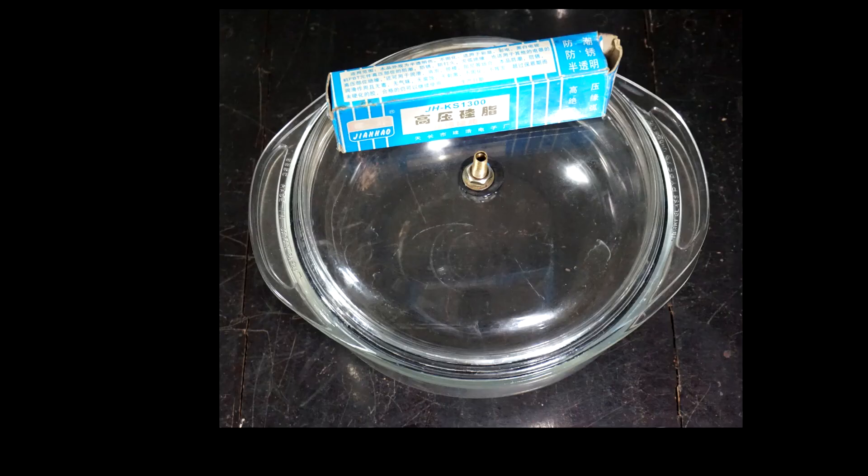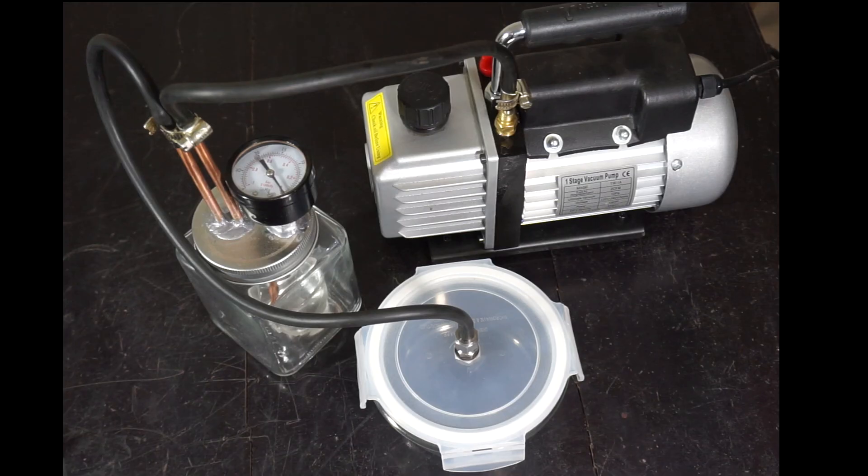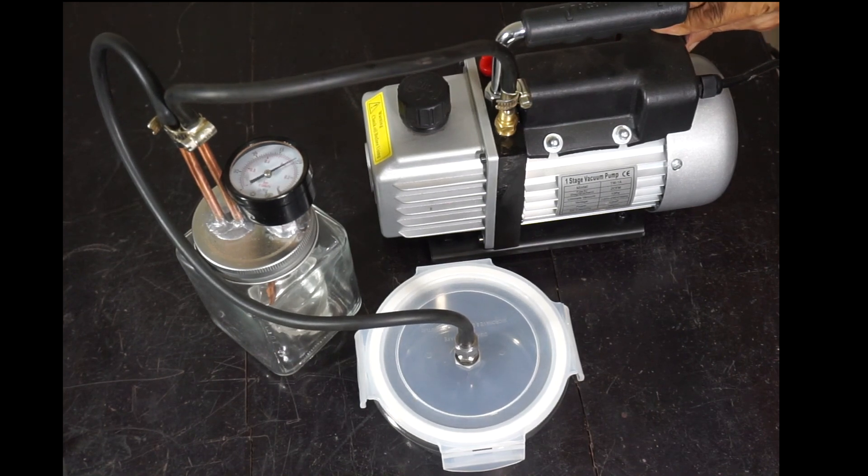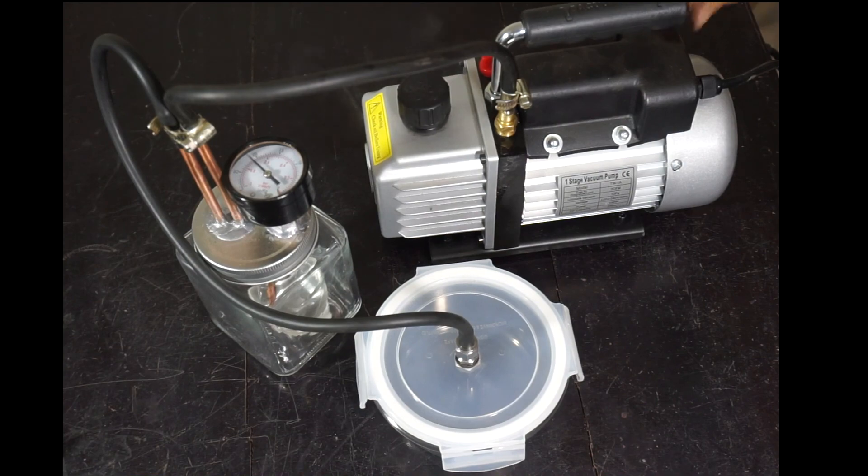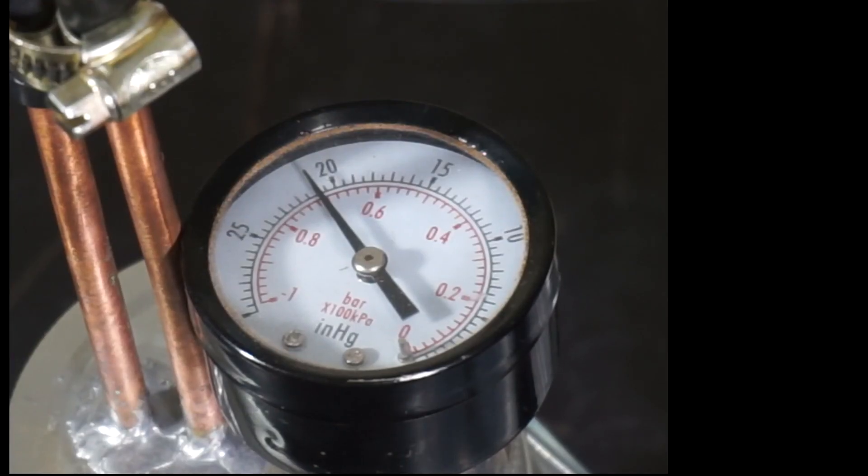This glass bowl has a plastic lid and it deforms under vacuum but it does not leak or completely collapse. A larger glass bowl and Chinese silicone grease. You can see the lid move with the vacuum here. This is oil mist not smoke. Not a bad vacuum from a single stage pump.